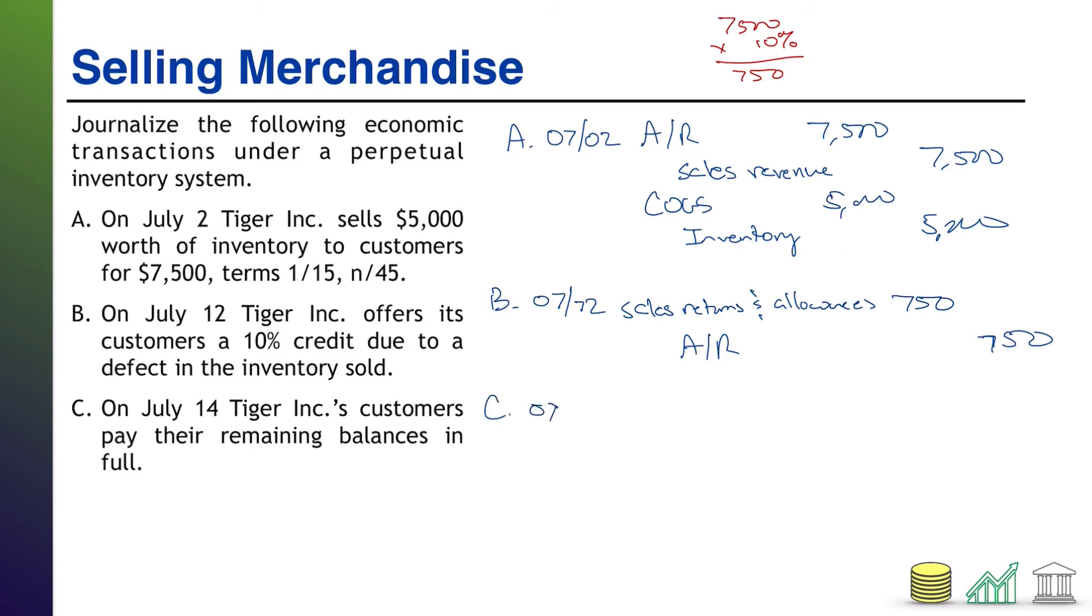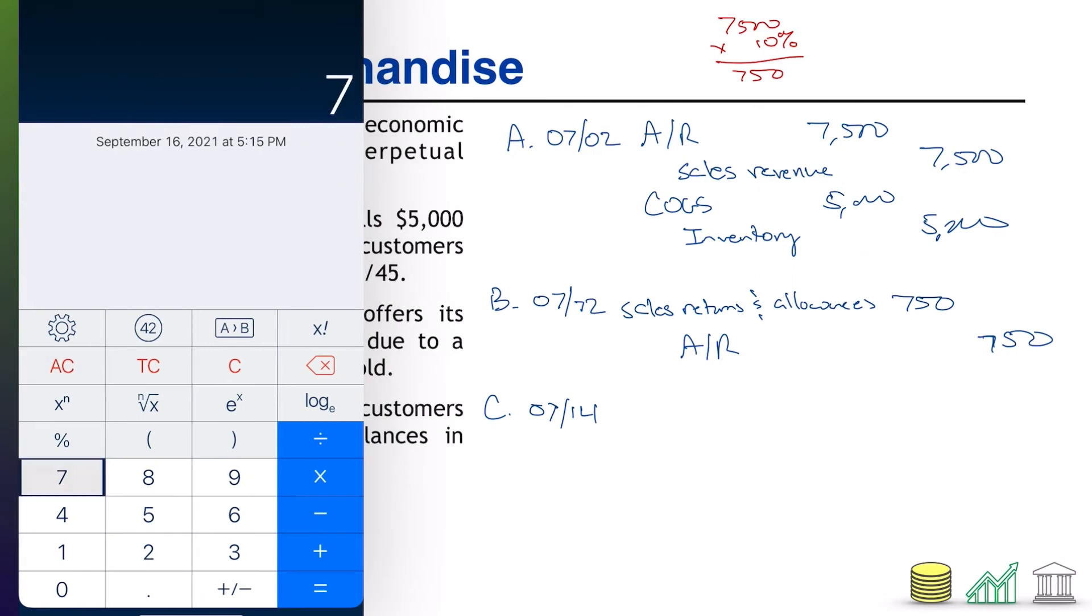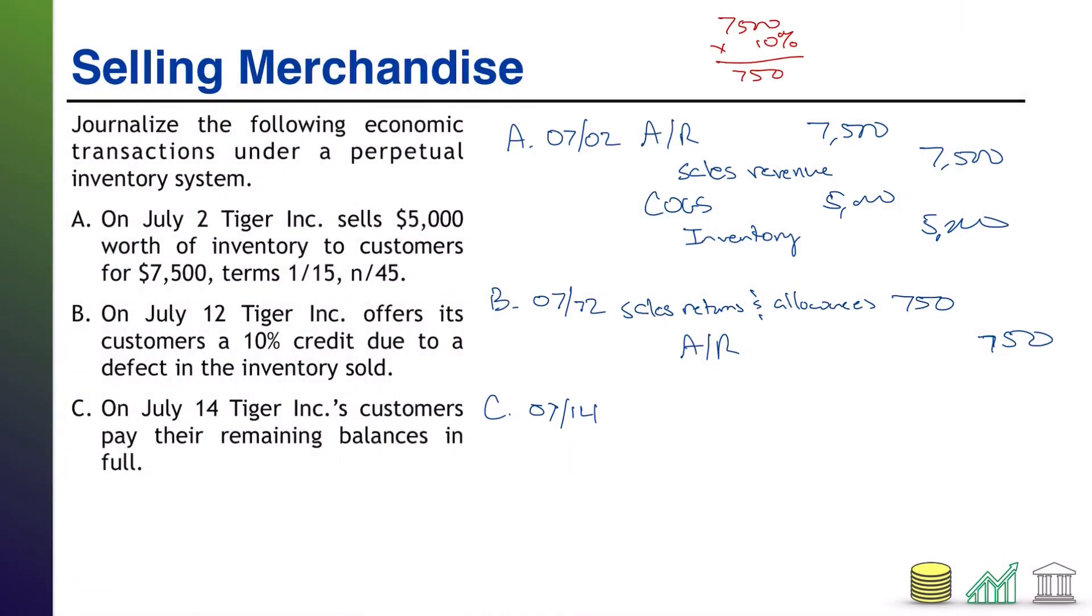C says on July 14th, Tiger Inc.'s customers pay their remaining balances in full. So we started off with $7,500 in our AR. We reduced it for them by $750. That means that their current balance is $6,750. And they're going to pay that off. So AR is going to go down by $6,750 as a result of this transaction. They're paying off the balance.